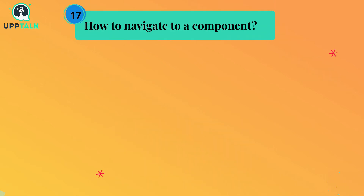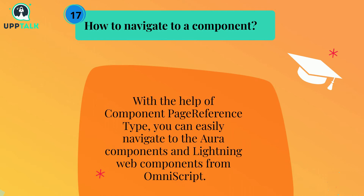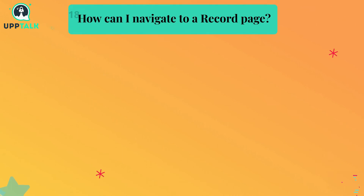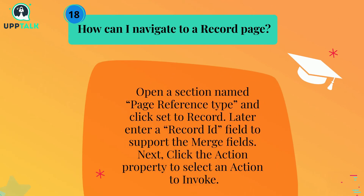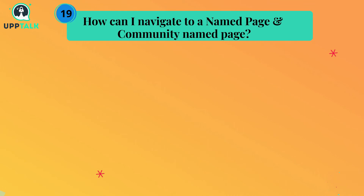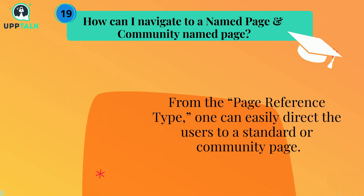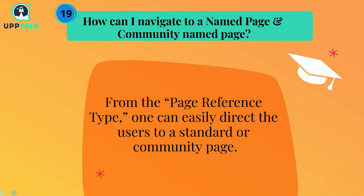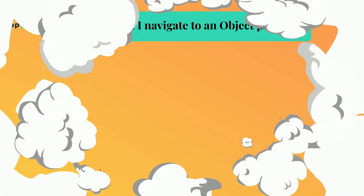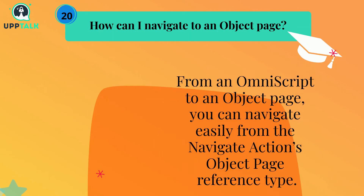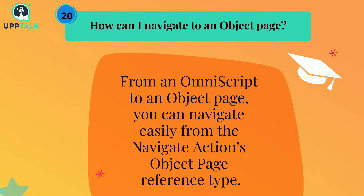How to navigate to a component? With the help of component page reference type, you can easily navigate to Aura components and Lightning Web components from OmniScript. How can I navigate to a record page? Open a section named page reference type and click set to record, then enter a record ID field to support merge fields. Next, click the action property to select an action to invoke. How can I navigate to a named page or community named page? From the page reference type, one can easily direct users to a standard or community page. How can I navigate to an object page? From an OmniScript, you can navigate to an object page easily from the navigate action's object page reference type.